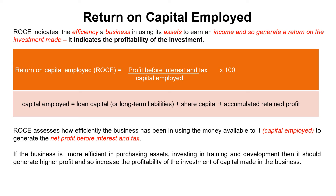Looking at the ROCE formula: it's operating profit divided by capital employed. As a business, you've had a certain amount of money — what have you done with it? You've generated a profit. You're looking at the operating profit, which is profit before interest and tax — the profit from your normal day-to-day business activities. If this ratio is going up, the people who have invested in or hold capital in the business are generating a higher return on investment. Hence it's expressed as a percentage.